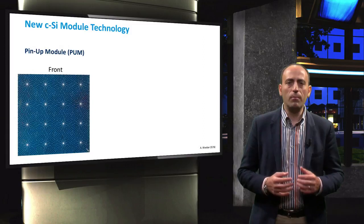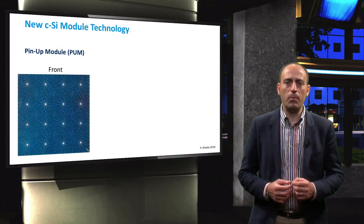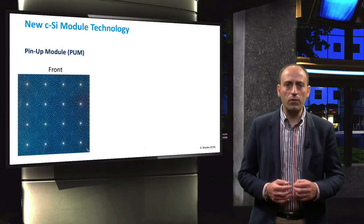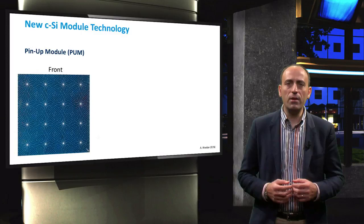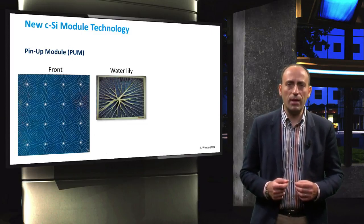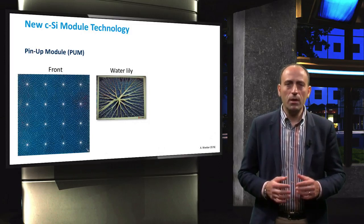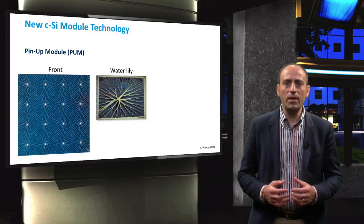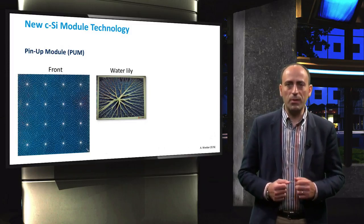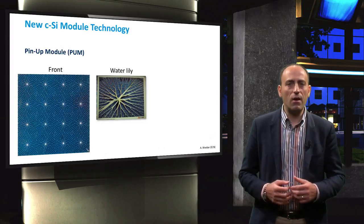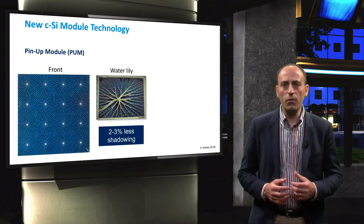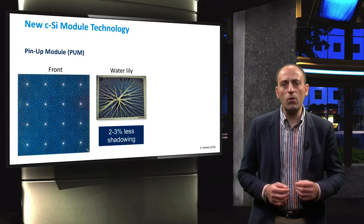An example of a metal wrap-through module is the so-called pin-up module that was developed at ECN in the Netherlands. The pin-up module, or PUM, design was inspired by a water lily and has a limited number of holes through the absorber layer, typically 9 or 16. These holes serve as pathways for interconnection of the front side metallization to the rear side by using metal pins. In this way, bus bars at the front side are eliminated. This reduces shading losses to 2 or 3% and leads to an overall efficiency increase.